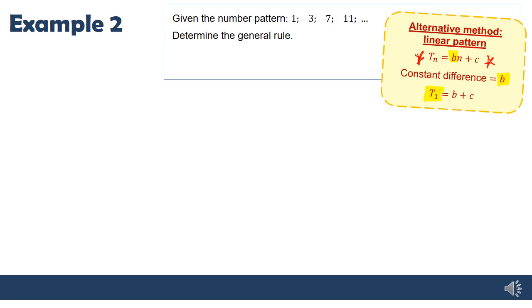Let's see that in action. In this example we have the number pattern 1, -3, -7, -11, so we're decreasing now. I'm going to write it out and take the differences to make sure it has a constant difference, which it does. In this case it's a negative constant difference.